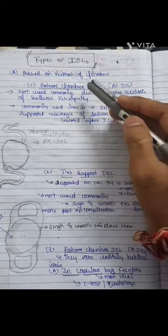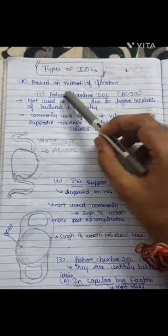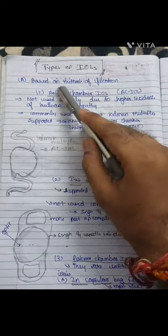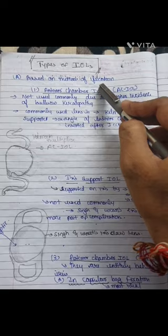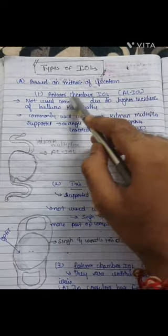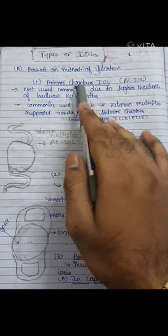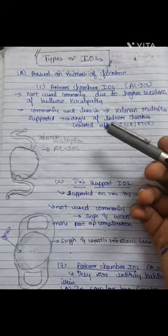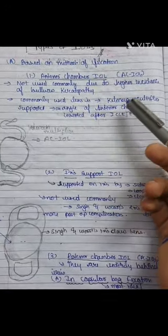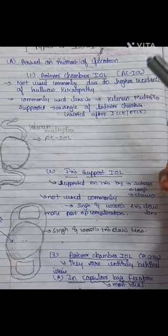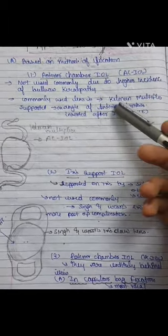Today's topic is types of intraocular lenses. The first classification is based on the method of fixation — where we fix the lens. Anterior chamber intraocular lenses are not commonly used because of a complication known as bullous keratopathy. The commonly used anterior chamber lens is the Kelman multiflex supported lens, which is supported on the angle of the anterior chamber.